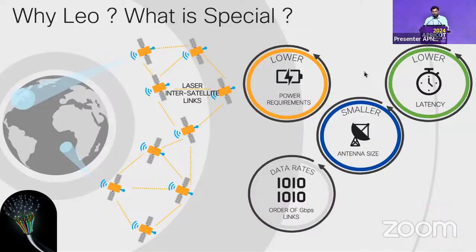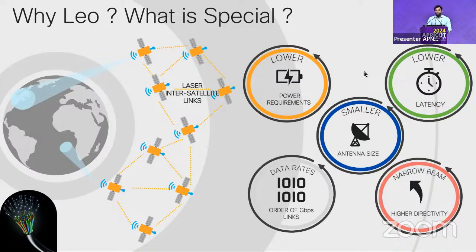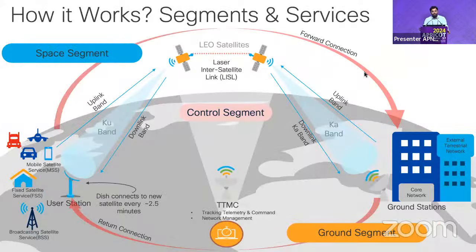Because these satellites use Ku and Ka bands at high frequencies, we get better data rates. There is also no mechanical steering in the antennas — they use phased array antenna technology, electronically steering the signal. This allows connection to multiple satellites simultaneously.